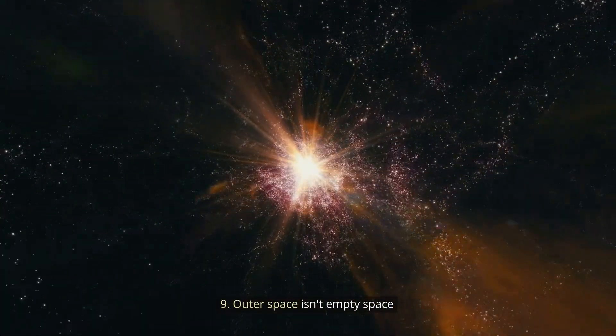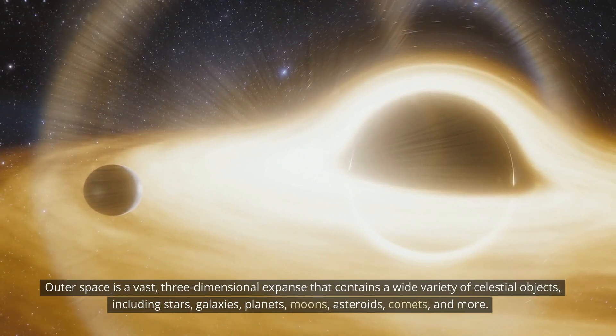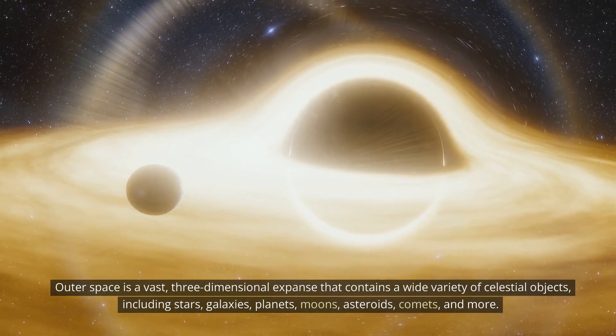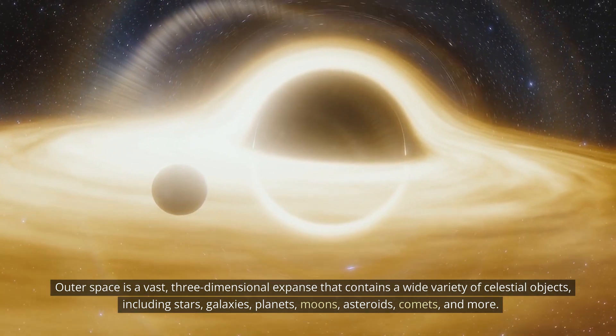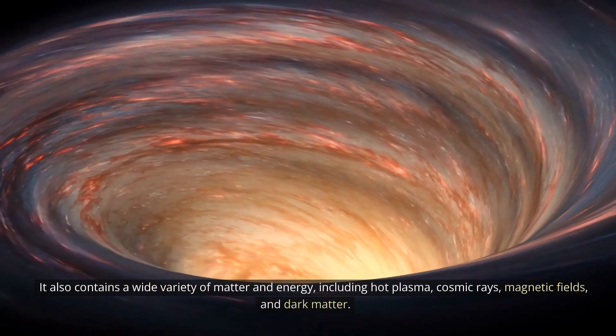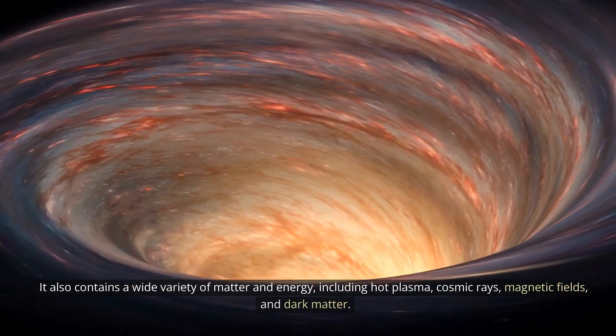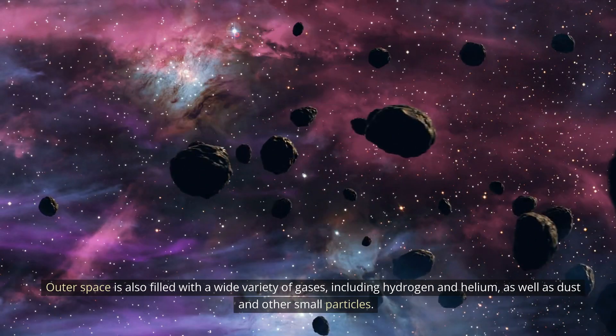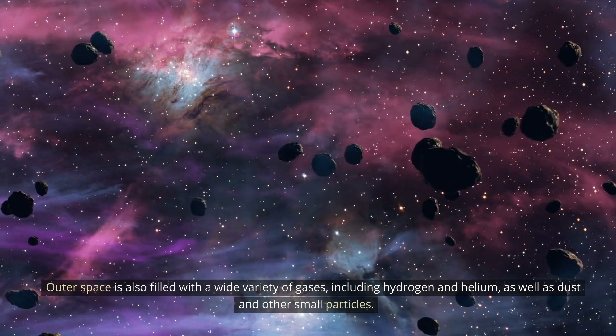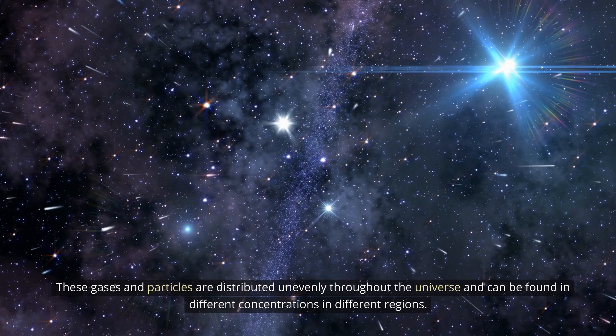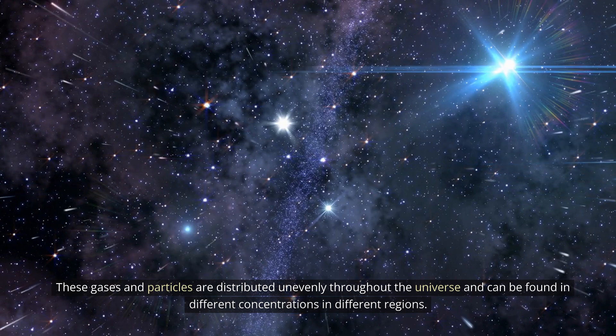9. Outer space isn't empty space. Outer space is a vast, three-dimensional expanse that contains a wide variety of celestial objects, including stars, galaxies, planets, moons, asteroids, comets, and more. It also contains a wide variety of matter and energy, including hot plasma, cosmic rays, magnetic fields, and dark matter. Outer space is also filled with a wide variety of gases, including hydrogen and helium, as well as dust and other small particles. These gases and particles are distributed unevenly throughout the universe and can be found in different concentrations in different regions.